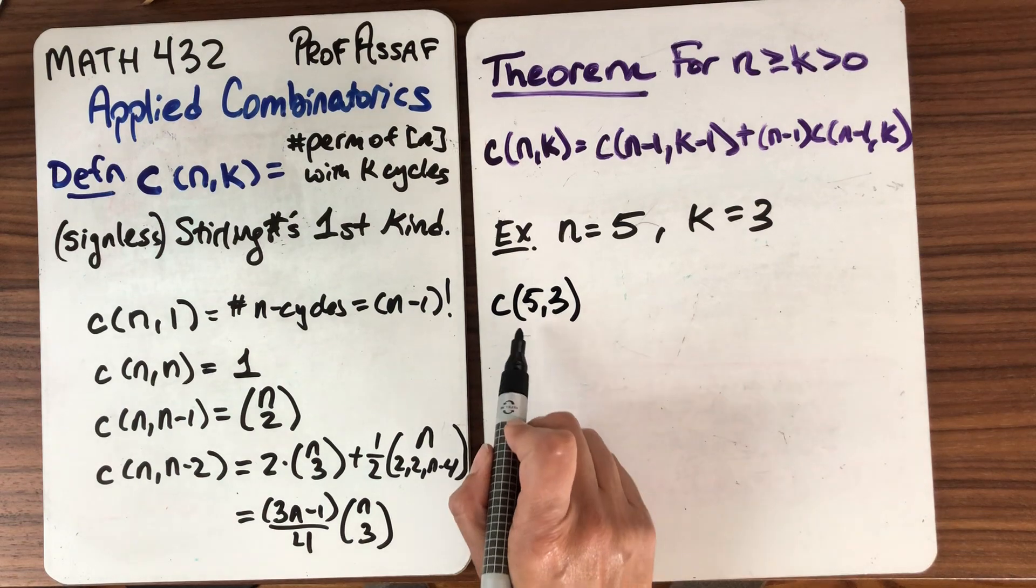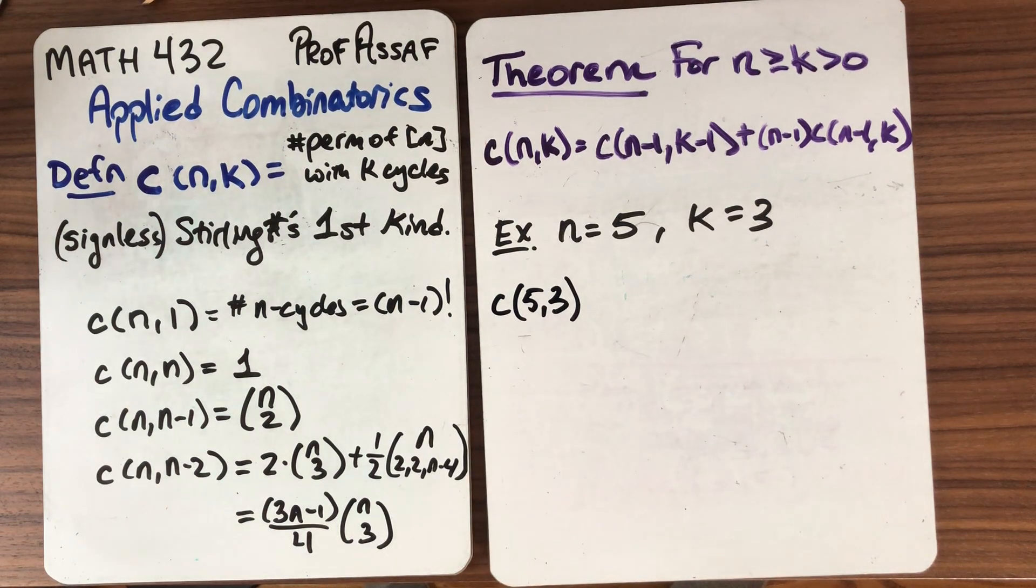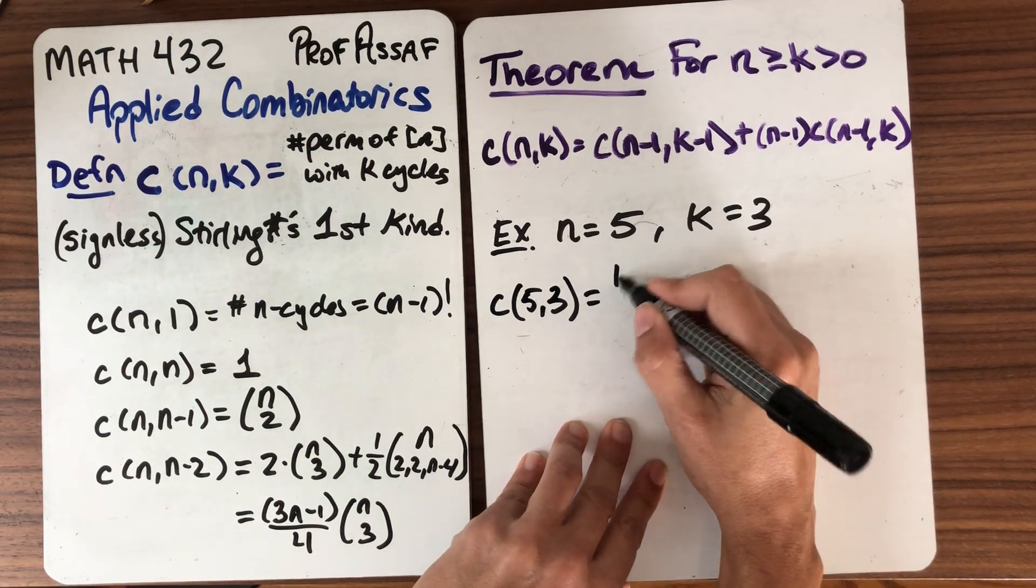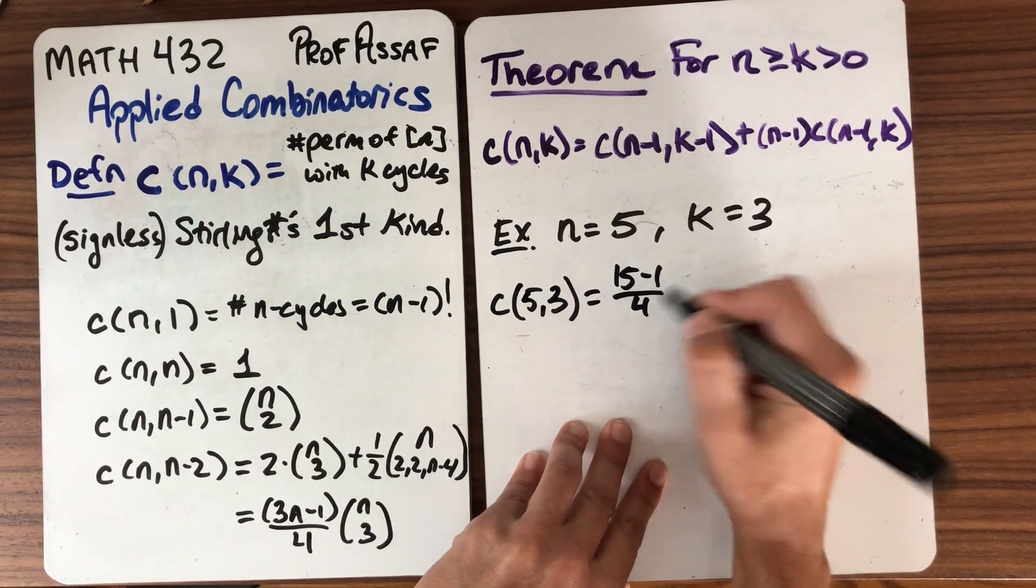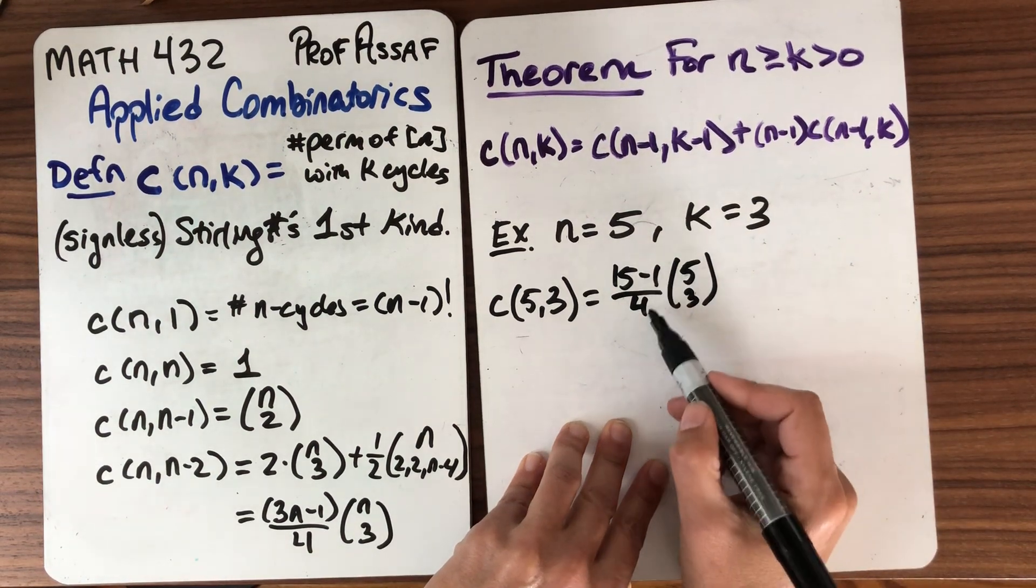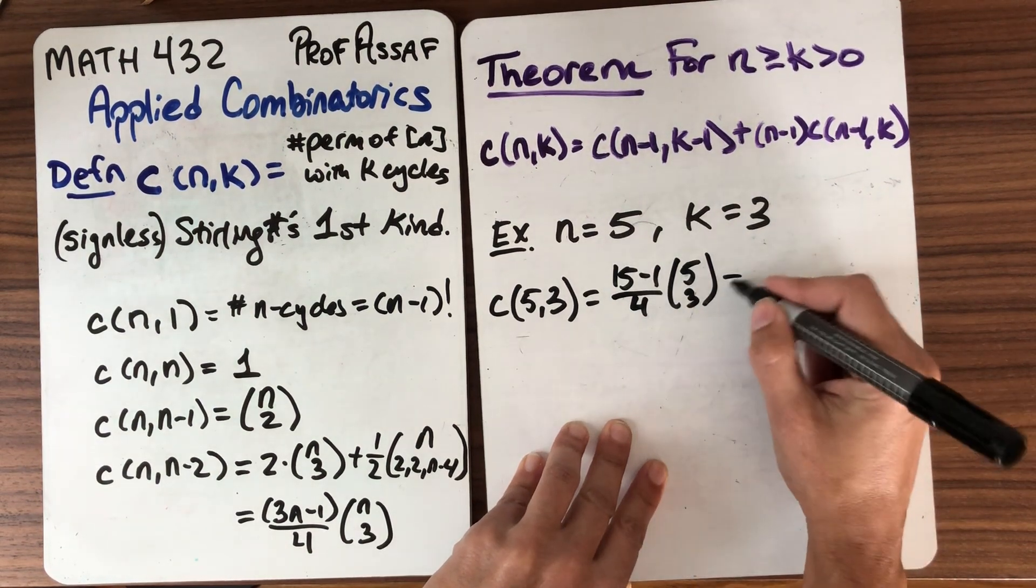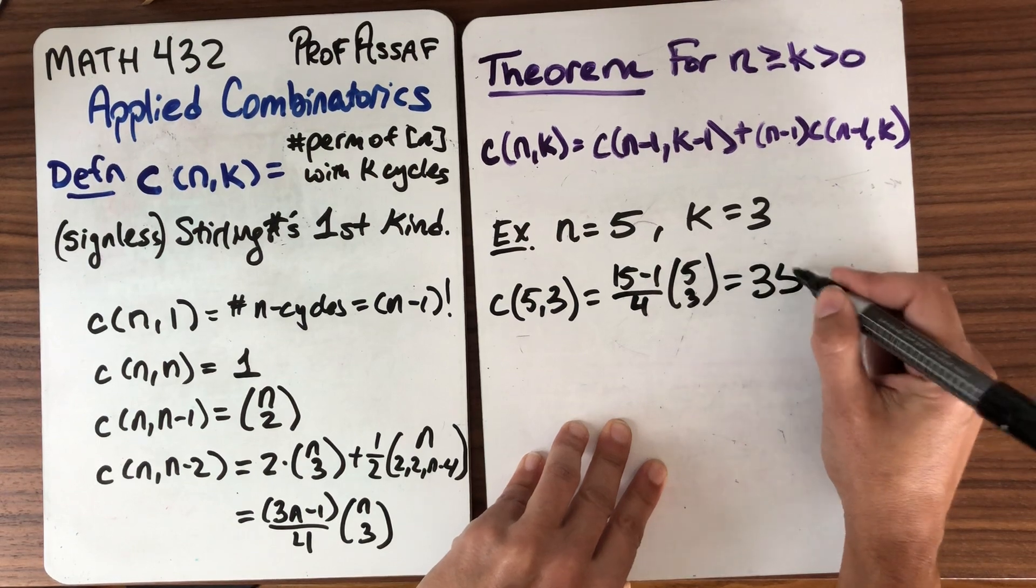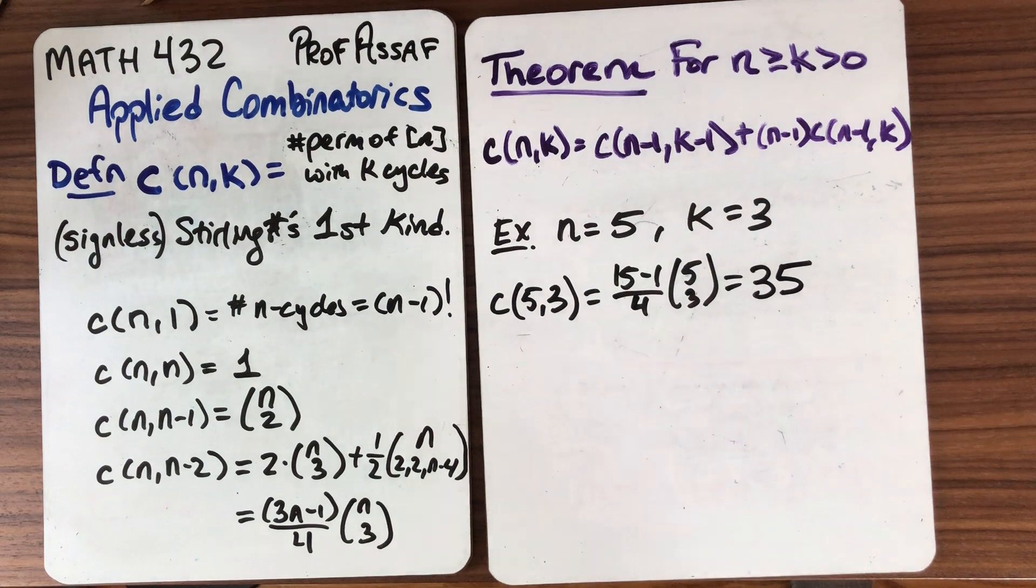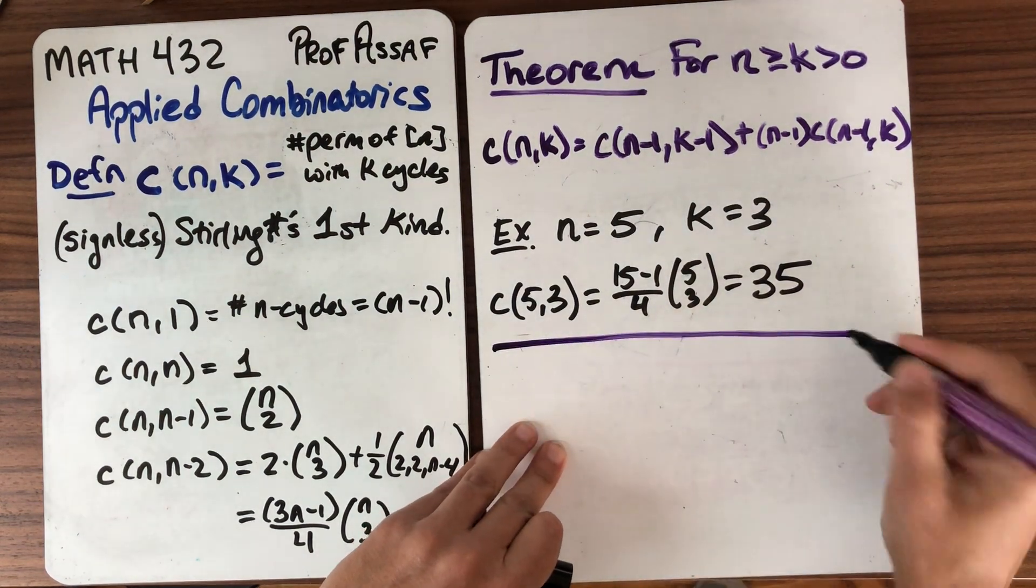So what is c(5,3)? Three is two less than five. That's kind of handy. It's why I gave you this computation right here. So what is that? That's going to be 3 times 5 minus 1 divided by 4 times 5 choose 3. So that's 14 over 4 times 10. Luckily, that's going to give us an integer. So 35 is our target.